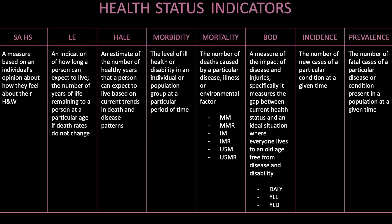Infant mortality is the number of deaths of children under the age of one. The infant mortality rate is the number of deaths per 1,000 of children under the age of one. Under-5 mortality is the number of deaths of children under the age of five; the under-5 mortality rate is the number of deaths per 1,000 live births. Burden of disease is a measure of the impact of disease and injuries — specifically, it measures the gap between current health status and an ideal situation where everyone lives to an old age free from disease and disability.